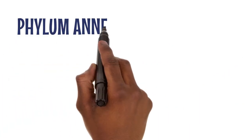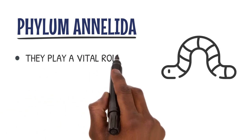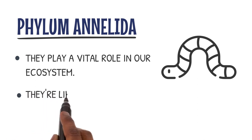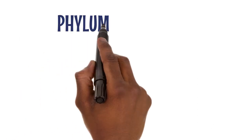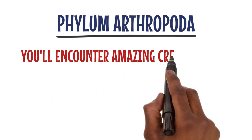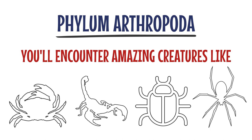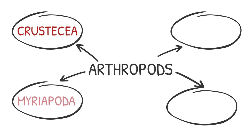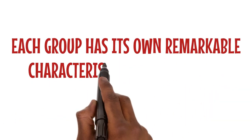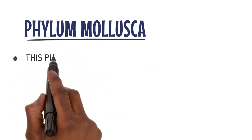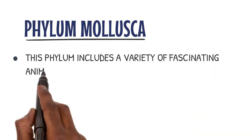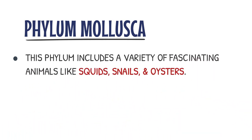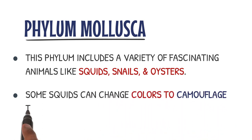Next is Phylum Annelida, home to the earthworms. They play a vital role in our ecosystem — they are like the recyclers of the soil. In Phylum Arthropoda, you'll encounter amazing creatures like crabs, scorpions, insects, and spiders. Arthropods are further divided into four subphyla: Crustacea, Myriapoda, Insecta, and Arachnida. Each group has its own remarkable characteristics. Let's move on to Phylum Mollusca, which includes a variety of fascinating animals like squids, snails, and oysters. Some squids can even change colors to camouflage themselves from predators.